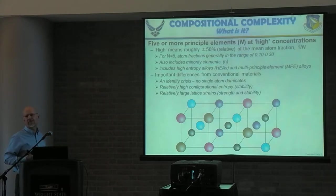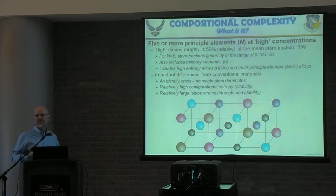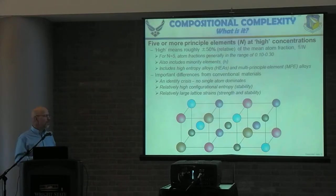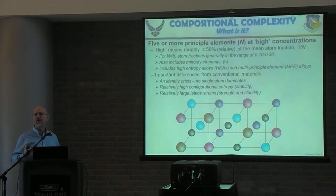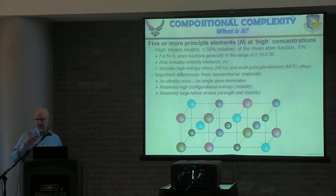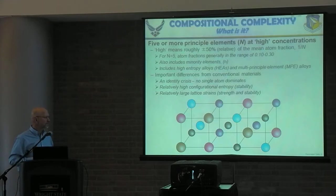This material has what we think of as an identity crisis. It has five or more elements, all of them at a major level of concentration. No single atom dominates, and no single atom pair dominates. In fact, this alloy with five elements — instead of having one atom pair to worry about — you have 15 atom pairs to worry about. You can't focus on one or two pairs and say that dominates. You have to consider all of them.